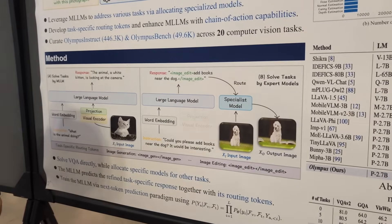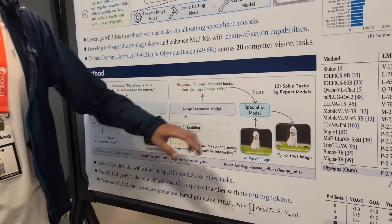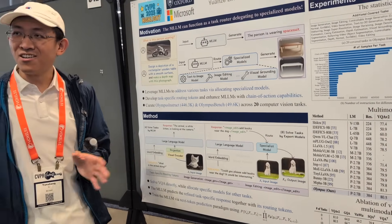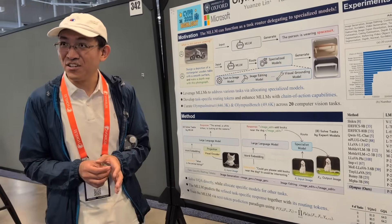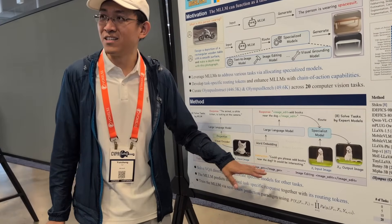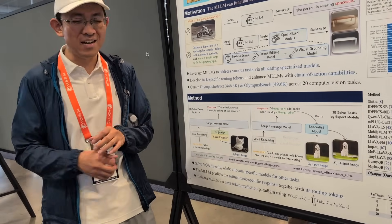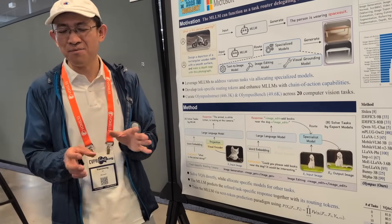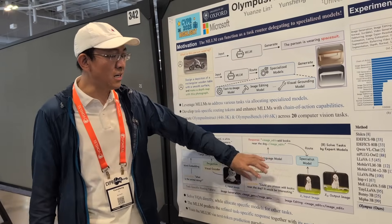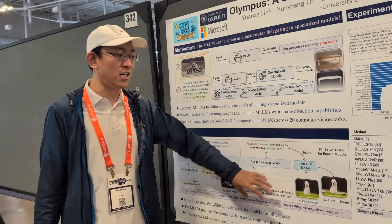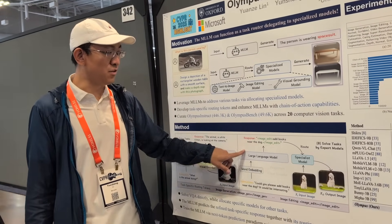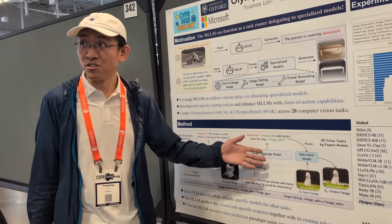Another design is that since the expert may not be trained with a very large language dataset, it cannot understand the user's instruction correctly. The user's instruction can be anything — random, arbitrary. So we use the language model to help us extract the keywords from the instruction, like 'add books near the dog.'